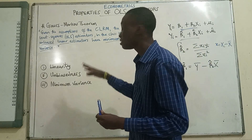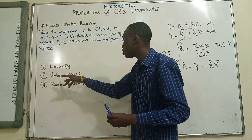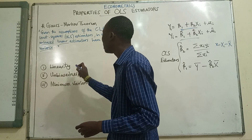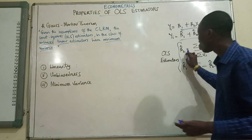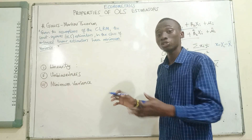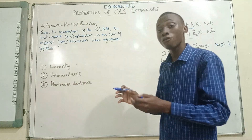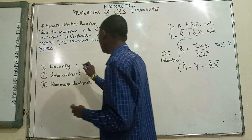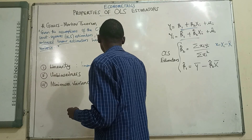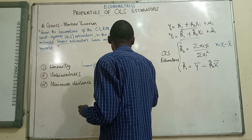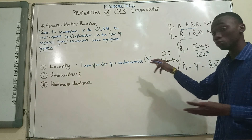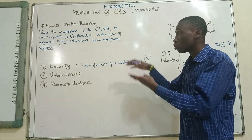The three desirable properties that OLS estimators possess — when the assumptions of the classical linear regression model are satisfied — are linearity, unbiasedness, and minimum variance. When we talk of linearity, we mean that the estimators — beta 2 hat and beta 1 hat — represent a linear function of a random variable. In this case, the random variable is the dependent variable Y. We'll walk through the mathematical proof shortly.